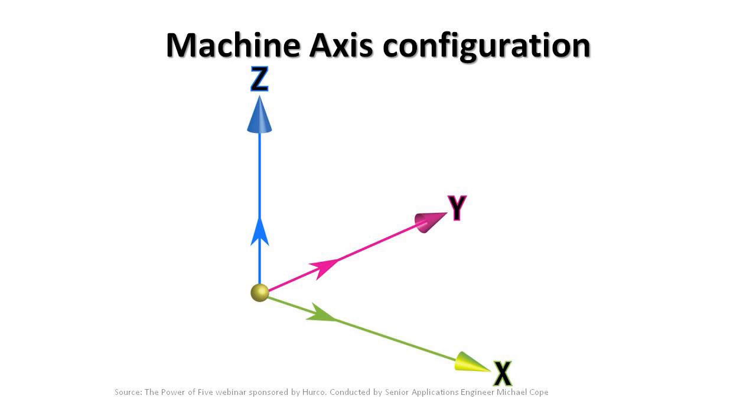The X, Y, and Z associated with a 3-axis machine is pretty simple, and just about everybody in the industry has that down pat.